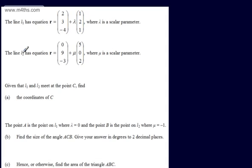Line L2 has equation R = (0, 9, -3) + μ(5, 0, 2), where μ is a scalar parameter.